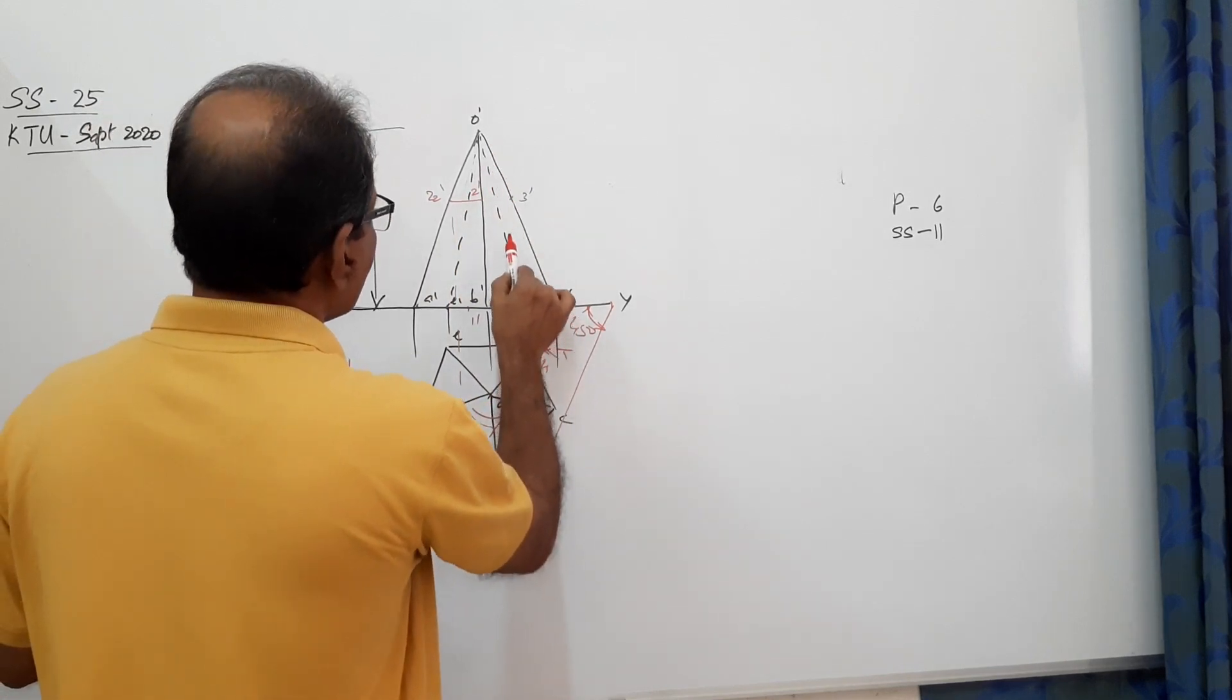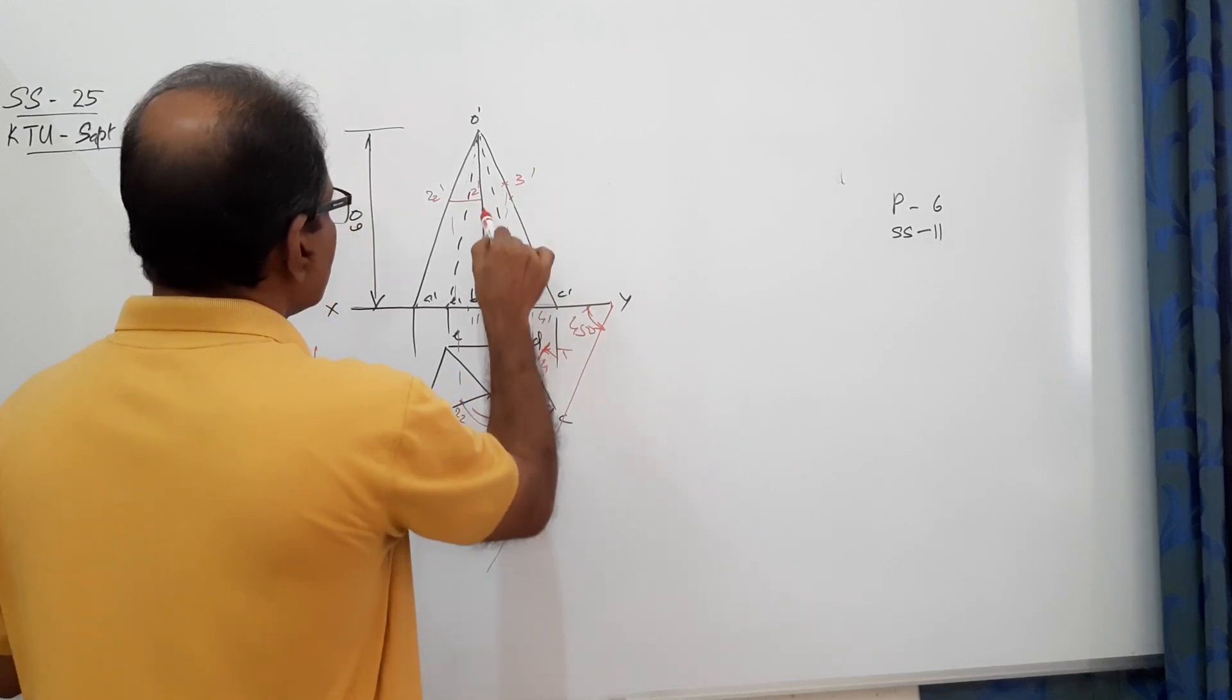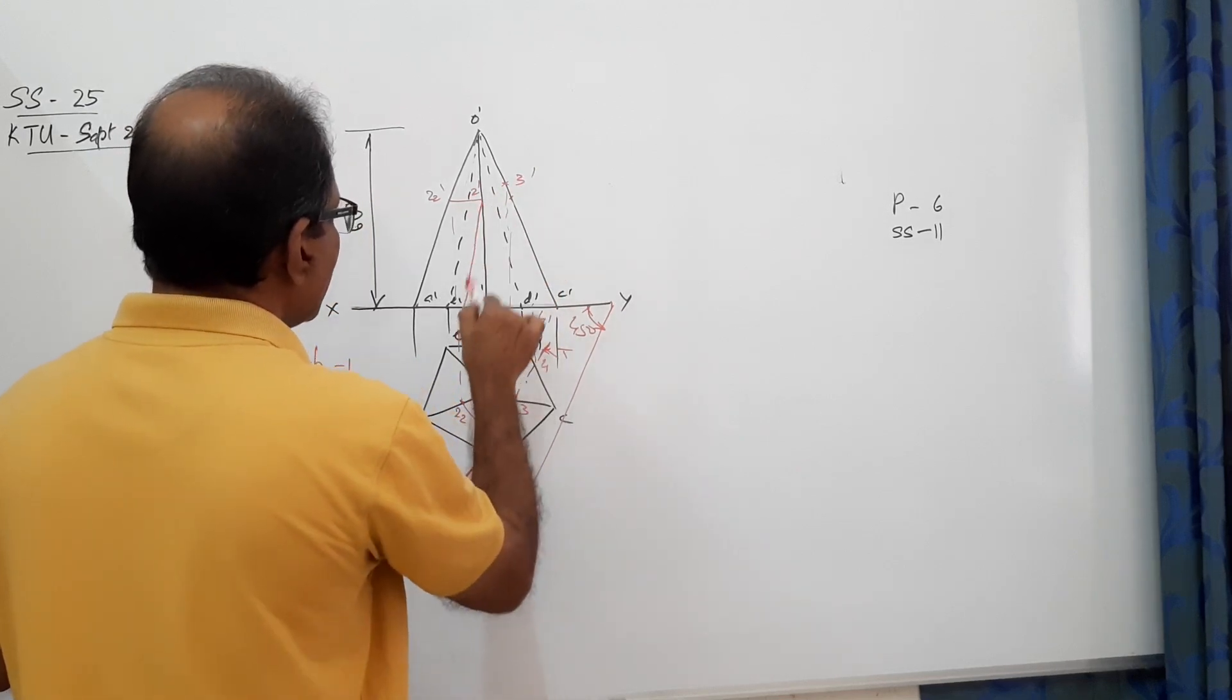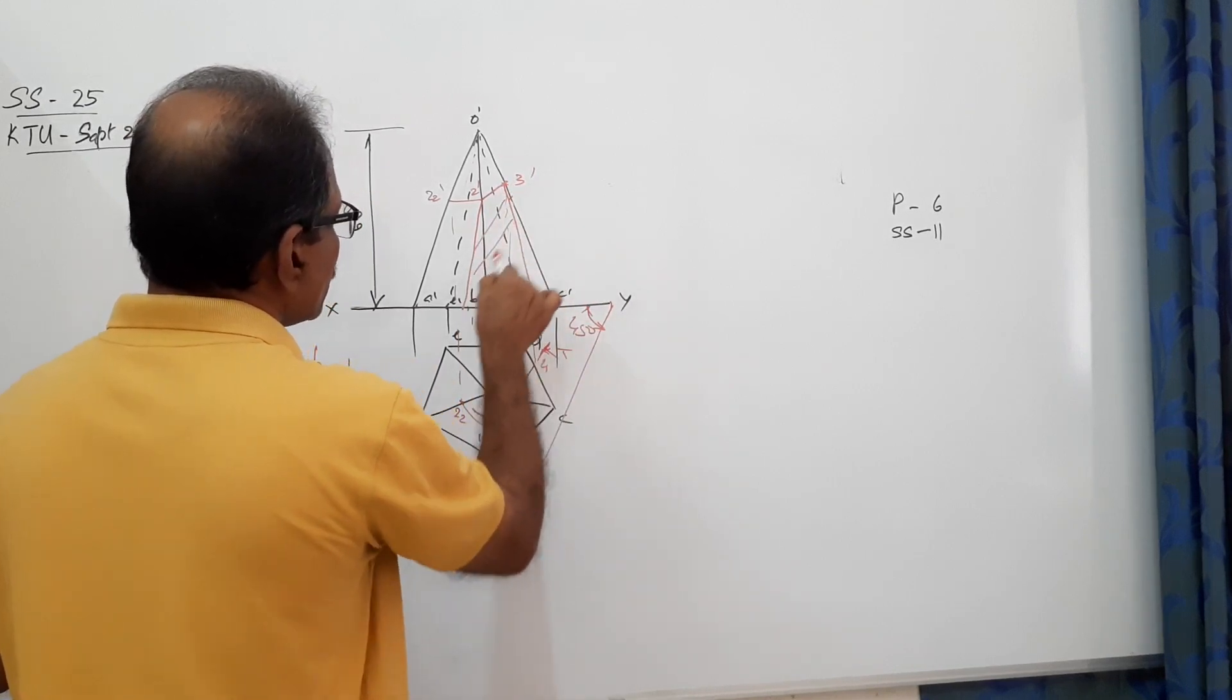This may be further connected. 1 dash, 2 dash, 2 dash, 3 dash, and 3 dash, 4 dash. You hatch this.